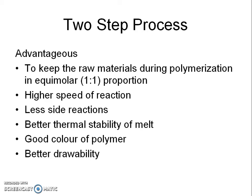The 2-step process is used for manufacture of polyester polymer as it has a number of advantages: it keeps the raw materials during polymerization in equimolar (1:1) proportion, gives higher speed of reaction, results in less side reactions, gives better thermal stability of melt, and good color of polymer.